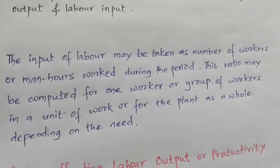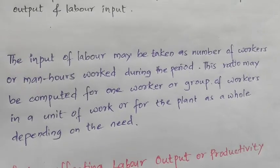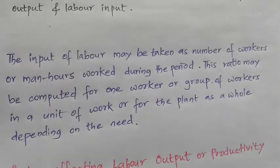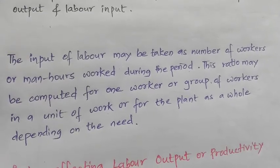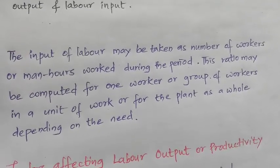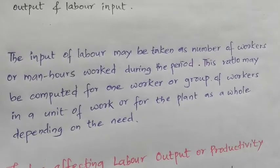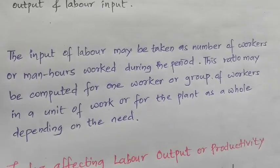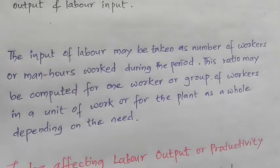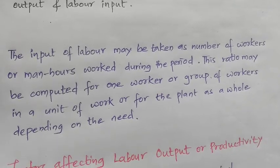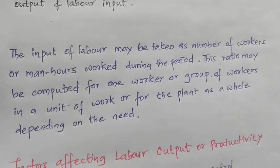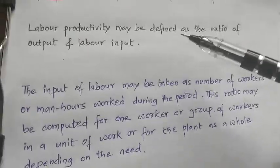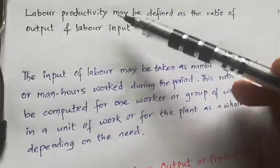Another way to measure labor productivity is for a given work or group of workers during the job. The enterprise fixes a certain target volume of output in a given day or period. The actual volume of output produced by the worker during the period is compared with the target or standard volume to assess the labor productivity. This definition suggests that this is in fact a way to measure total productive work and not of labor productivity alone.